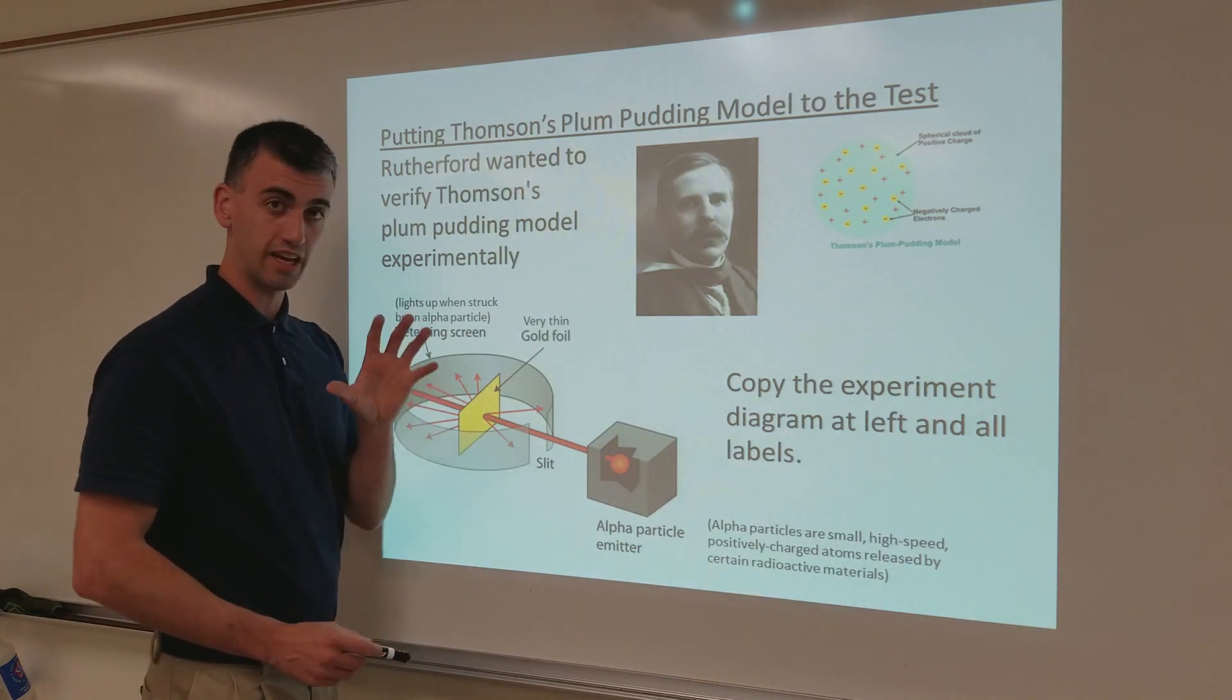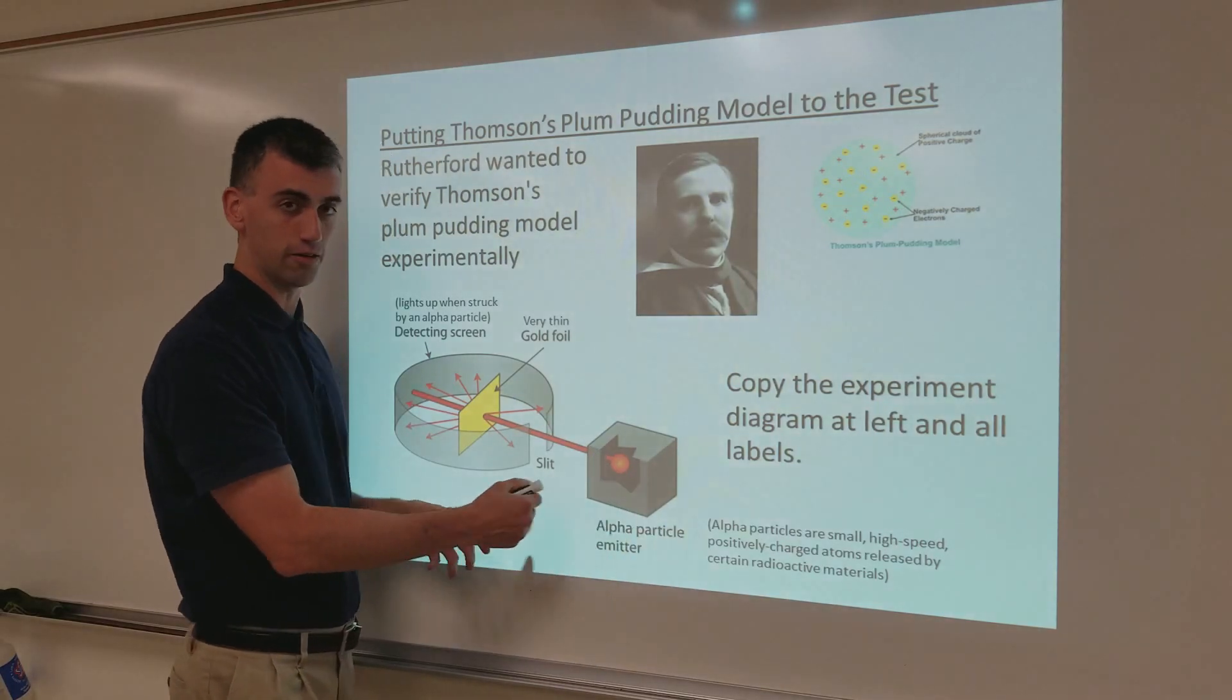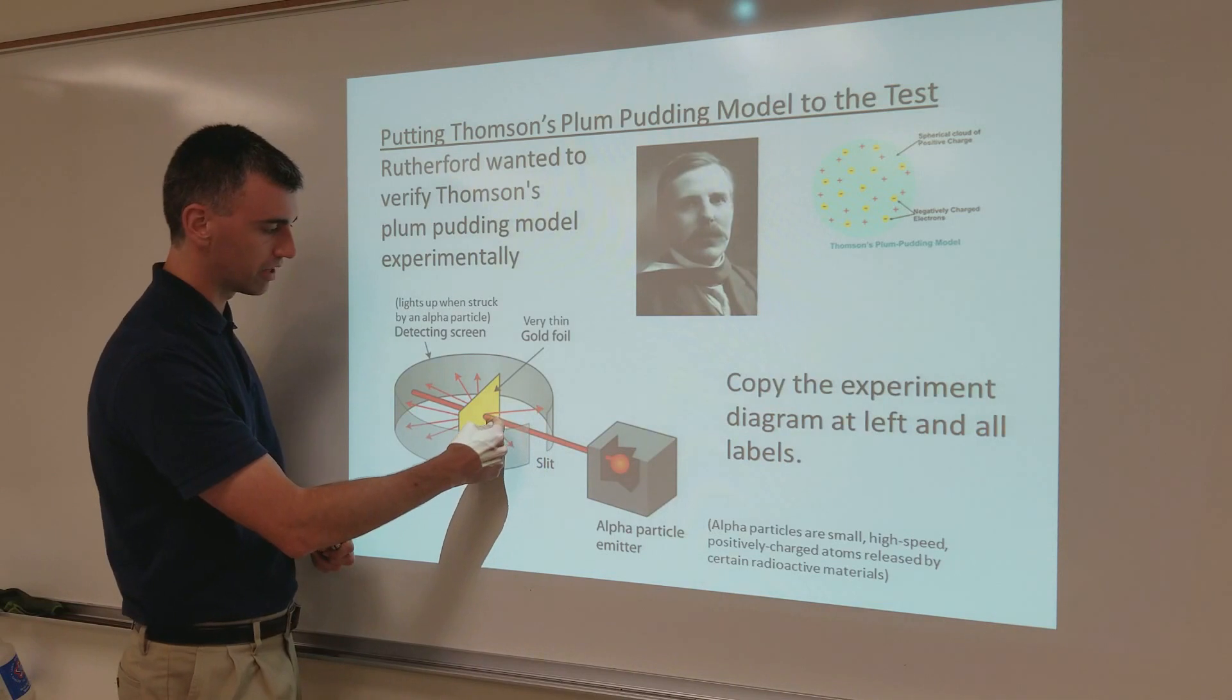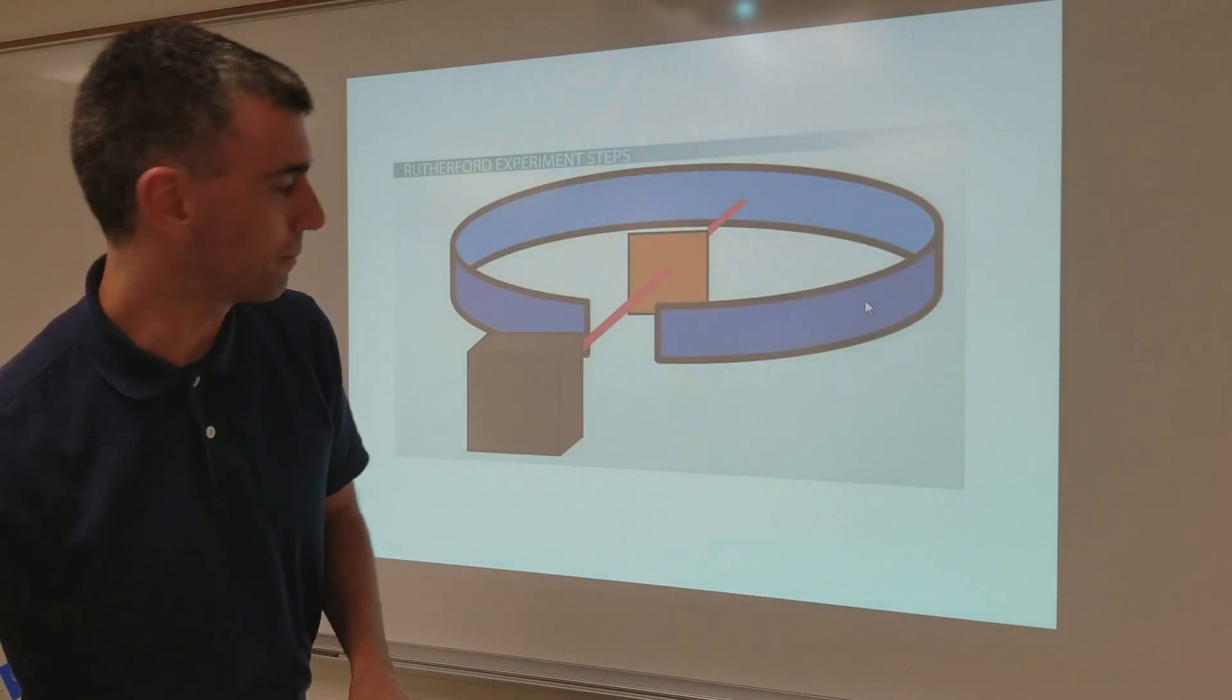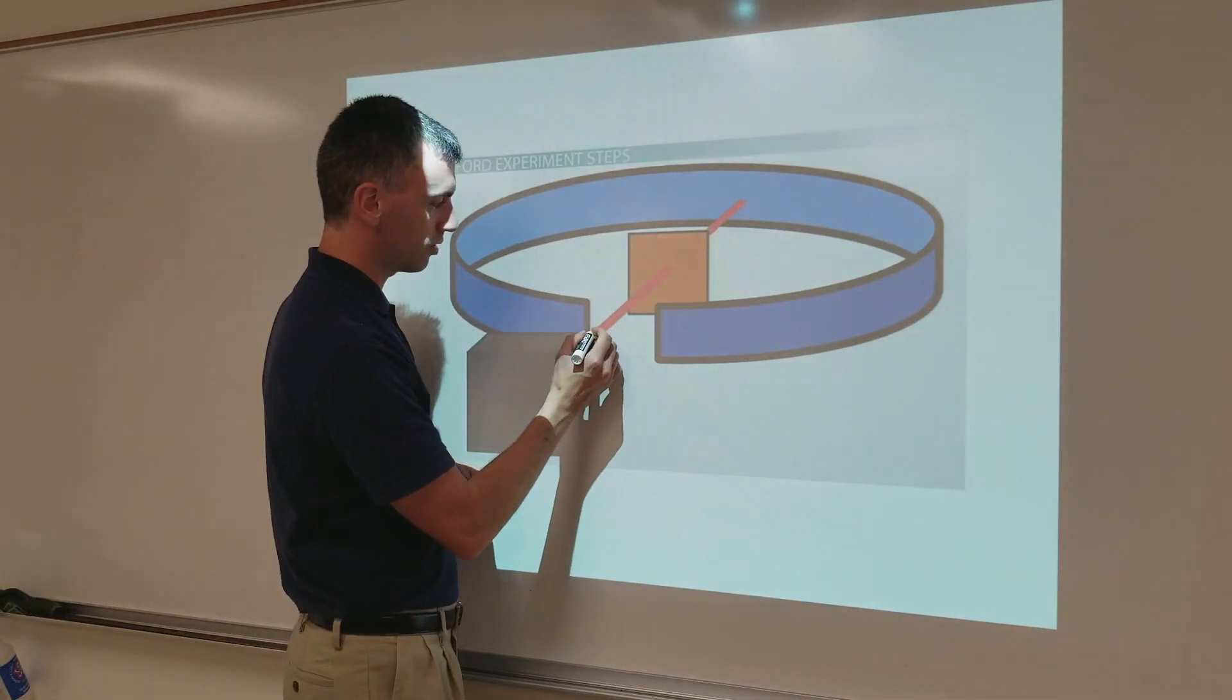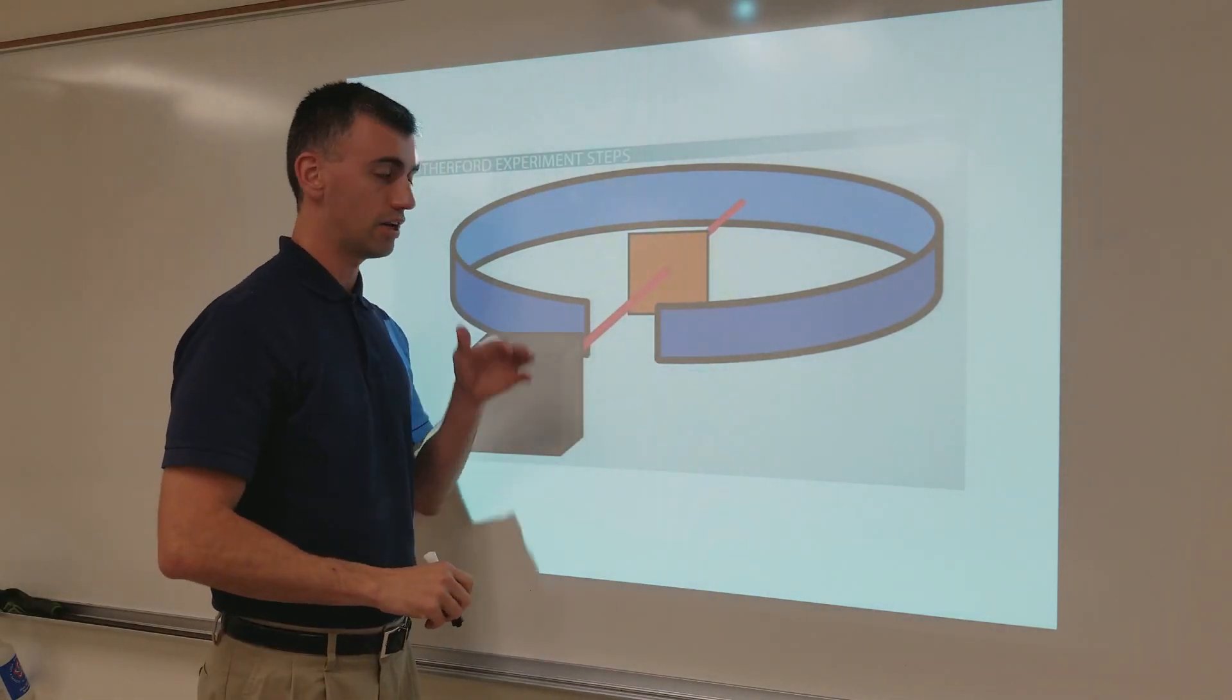Now, the idea was, if these alpha particles, these positively charged alpha particles, came shooting out and hit the gold foil, he expected it to go straight through in a way like you've got a diagram in one of these slides here. There we are. He expected to see this, where the alpha particles would go through the gold foil and straight through to the other side, uninterrupted.